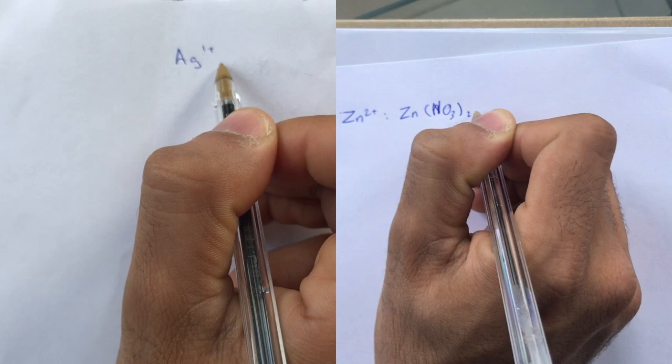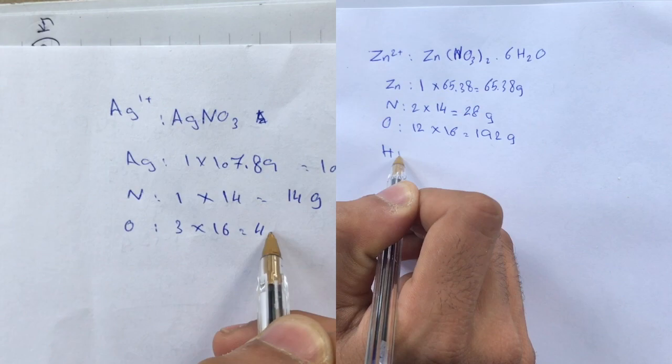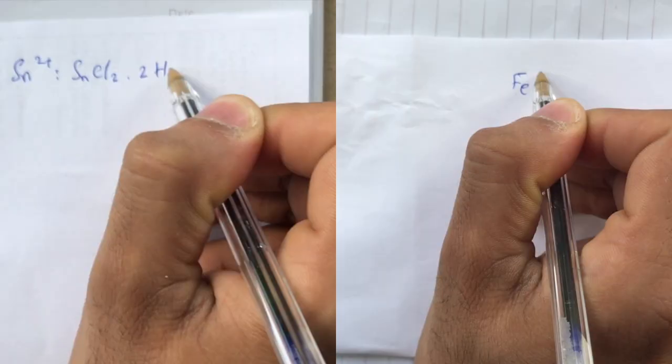First thing we did was calculating the total molar mass for each material in order to get the mass to be used for 50 ml of water.